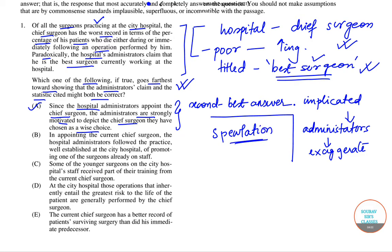So if there is no conflict of interest, it would still be possible that the staff would consider him the best surgeon. So A can be the second best answer for us, but it is not the first choice. This explanation we are rejecting and saying no to it.